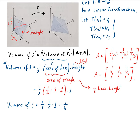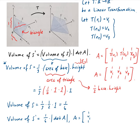Now we take this and multiply it by the determinant of A, and that will give us the volume of S prime. So the volume of S prime is going to be 1/6 times the determinant of our transformation matrix A, which is composed of the column vectors v1, v2, and v3 — coming from the transformations of e1, e2, and e3. That is the general formula to find the volume of the transformed tetrahedron S prime.